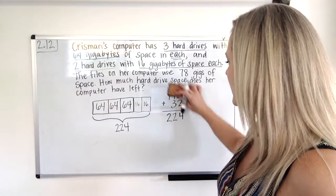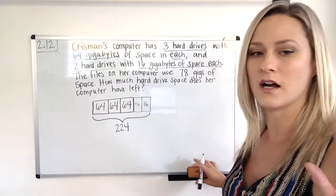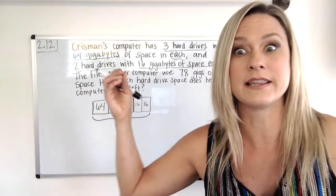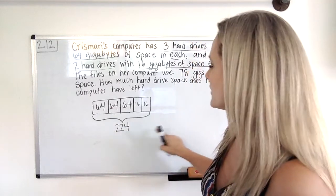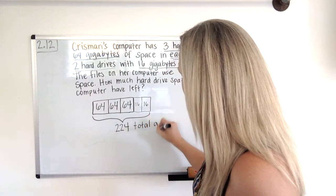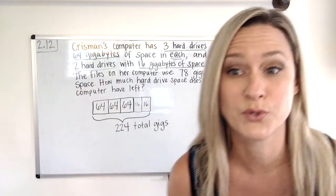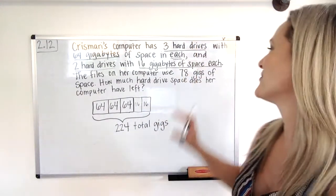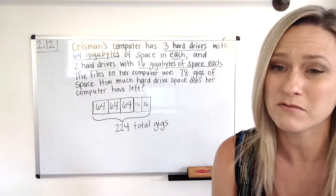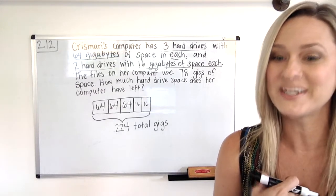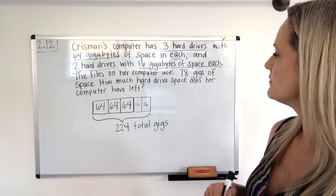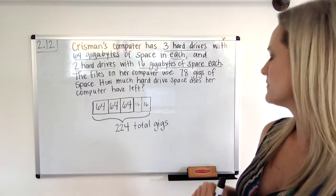Alright, so I'm going to actually put a little label. I'm going to put a label here saying total gigs. Okay, because we're not done yet. All we've done is this part here. What else do we need to do? So you probably need to stop and read the story again because I know I do. So if I do, you probably do too. Okay.